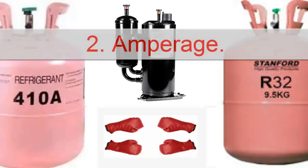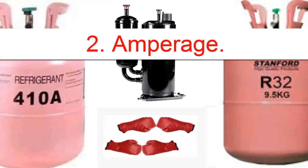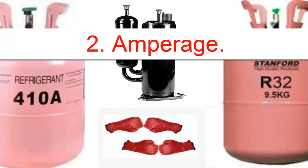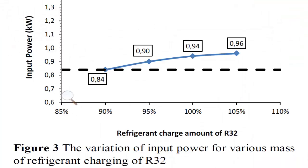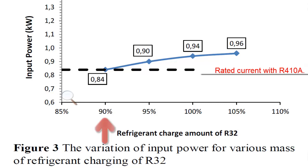2. Amperage. The electrical current of the compressor will be affected by the change from R410A to R32. Ideally, the nominal electrical consumption of the compressor should be maintained, representing the equipment's characteristics when operating with R410A. Studies have shown that to achieve this nominal consumption value, the equipment should be loaded with only 90% of the weight indicated for the R410A charge. A load value exceeding 90% will lead to an increase in the compressor's electrical consumption beyond the nominal value, which can result in abnormal compressor heating and a loss of equipment lifespan. This is because changing to R32 will lead to an increase in the mass flow rate of the refrigerant, resulting in an increase in discharge pressure. This rise in discharge pressure will cause an increase in electrical current and, consequently, in input power.